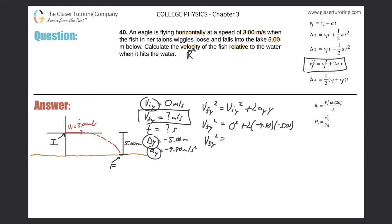Taking the square root of both sides, we get v_yf = ±√98 = ±9.90 m/s. Since the fish is traveling downward — in the negative y-direction — the velocity is negative. So the final velocity in the y-direction is negative 9.90 meters per second.